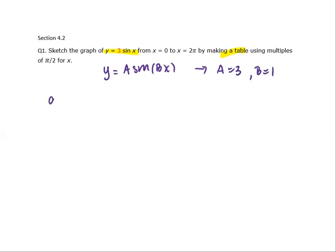We use A to compute the amplitude. The amplitude is the absolute value of A, which is 3, and the value B will be used to compute the period. The period follows the formula 2π divided by B. Since B is 1, the period is 2π.